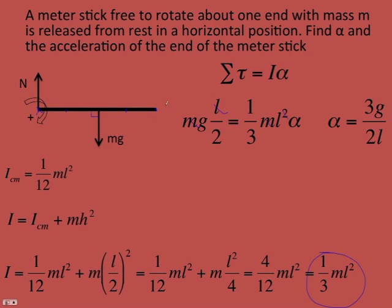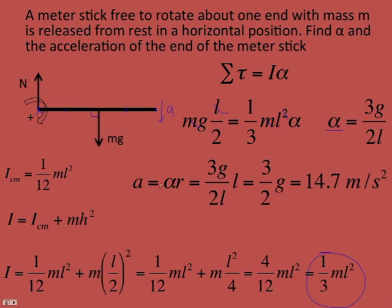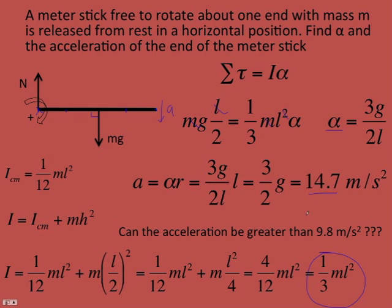What about the linear acceleration of the end of the rod? Remember, different points on the rod have different linear accelerations, but the angular acceleration is the same for every point — that's why it's useful. The linear acceleration a equals alpha·r, with r equals L, giving 3g/2, which is about 14.7 m/s². Wait — can the acceleration be greater than 9.8? Let's check that.